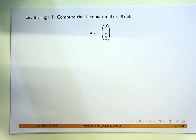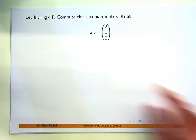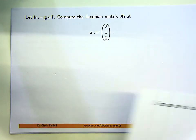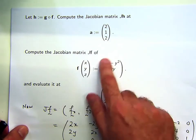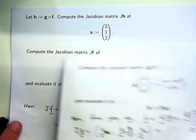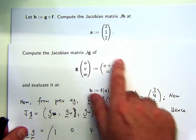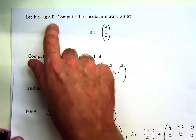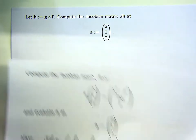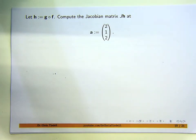Here is a question involving a composition of functions, g of f, which I'm defining as h. The particular functions g and f come from the previous questions. We're asked to compute the Jacobian matrix of this composition h at the point a. There is a chain rule available if you want to use it, and that's the way I'm going to show you how to do this problem first.